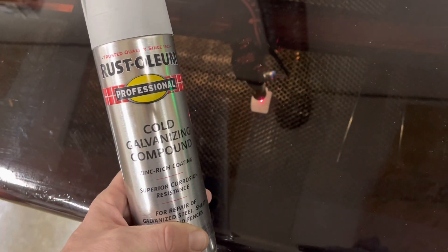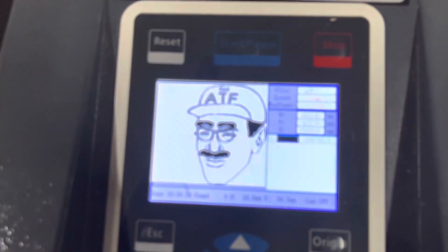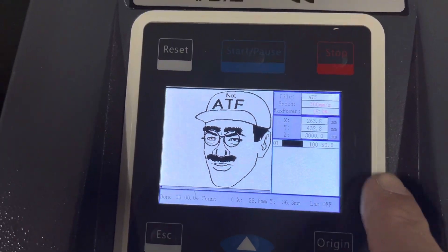All right guys, so a little cold galvanizing compound, laser, CO2 laser etching metal. See if this works. Got settings running 100 millimeters per second and 50% power.